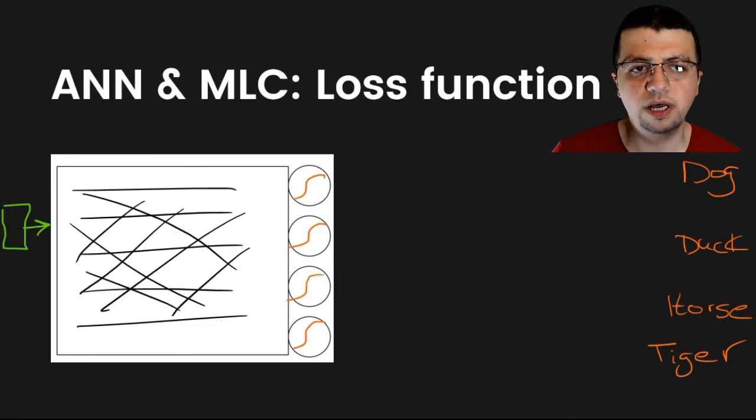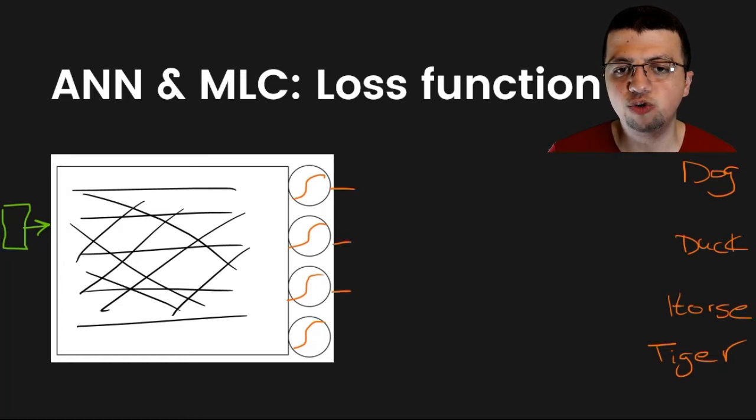You've got your output layer, where you've got your sigmoid functions, and we said that each one of these output a value between 0 and 1, and we said that we're going to call that output vector y hat.